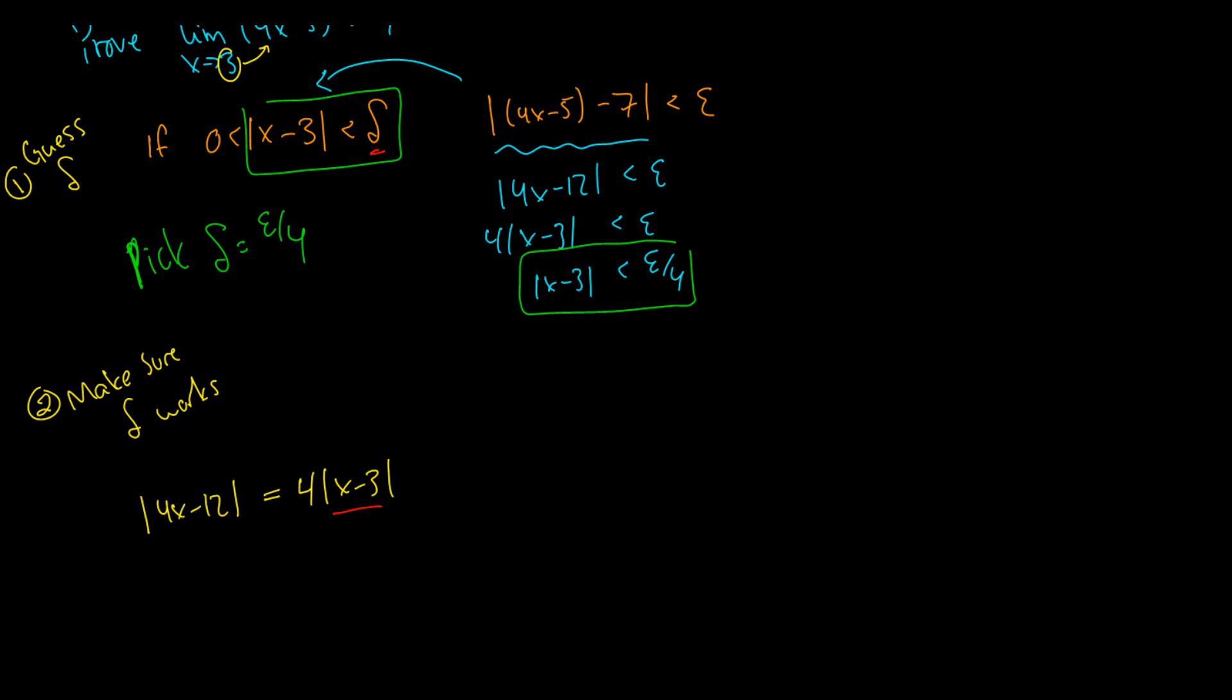Okay, so x minus 3 is less than delta. So what we'll do is then we know that it's less than 4 times delta, because if x minus 3 is less than delta, then 4 times x minus 3 is less than 4 times delta. But what do we pick delta to be? We picked it to be epsilon over 4. So this is equal to 4 times epsilon over 4, which is equal to epsilon.